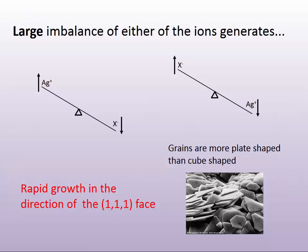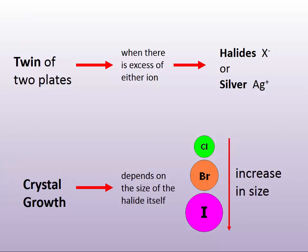Because of that direction, grains tend to be more plate-shaped than cube-shaped. We can see a twin of these two plates when there is an excessive excess of one of these ions — either the halide or the silver.